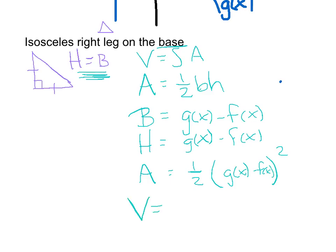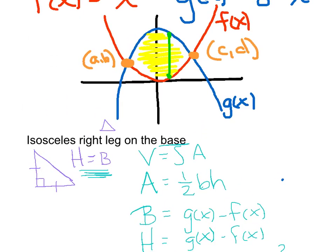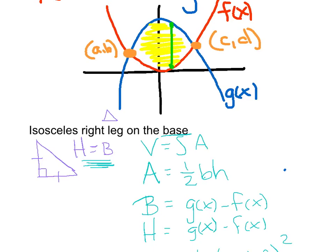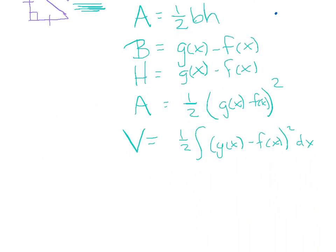And all volume is the integral of whatever you wrote for area, so I'll pull out the one-half as a coefficient. Watch your dx. And I need my bounds — this rectangle can move left and right. How far to the left can it go? To the x-value of that point, which is A. And to the right, the x-value, which is C. So my bounds should be from A to C. Then it's just a plug and chug in the calculator, but we're not going to worry about that part at the moment.